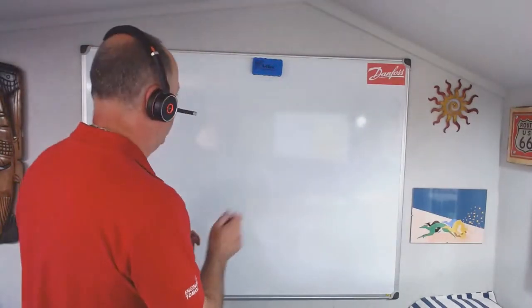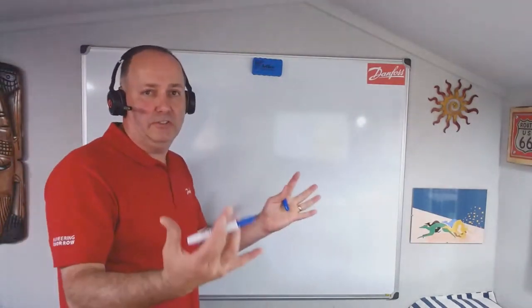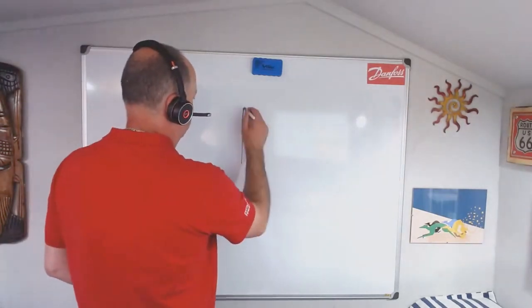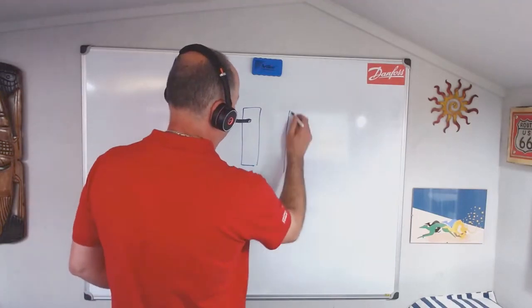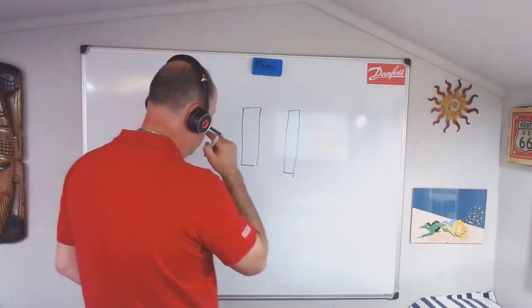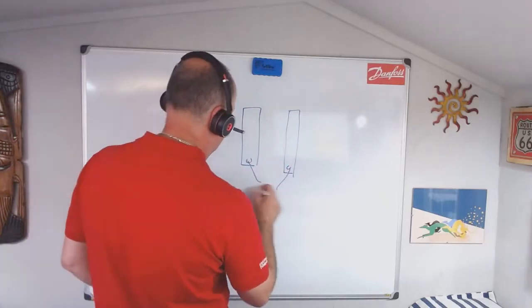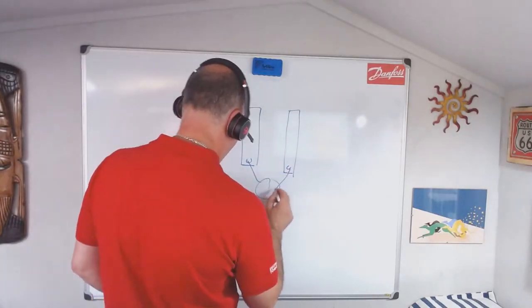Basically a plate freezer does what it says. There's two plates that are refrigerated. You've got two plates which are hinged on a mechanism.